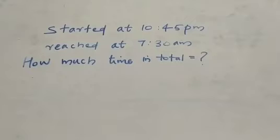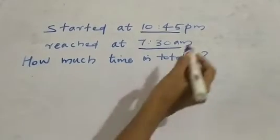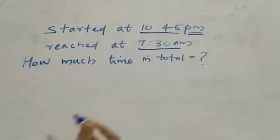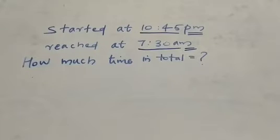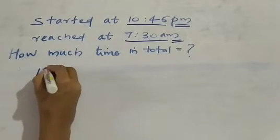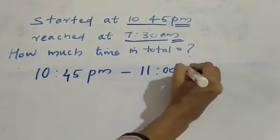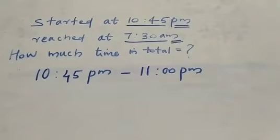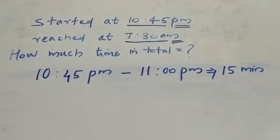In the question, they started at 10:45 PM — started in the night because this is PM — and reached at 7:30 AM in the morning. So we want to find the total time they traveled. From 10:45 PM to 11 PM — how many minutes? That is 15 minutes.